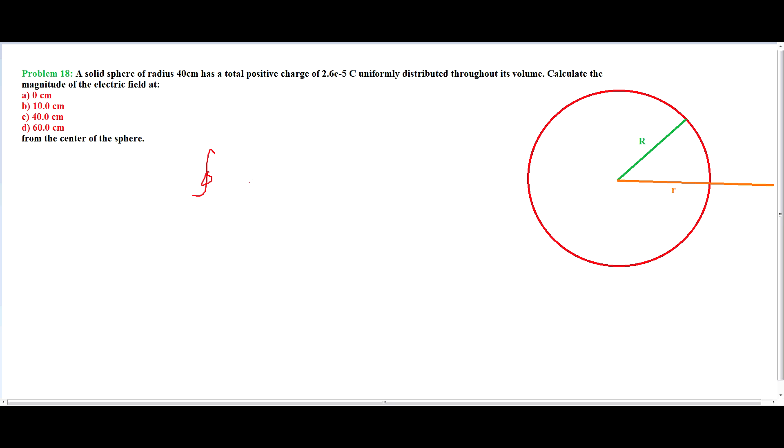The way I did this is I knew that the integral of the electric field dA is equal to the total charge of the sphere divided by the permittivity of free space. This is an equation given to us by Gauss's law, and I solved for the electric field for the first part of the question.